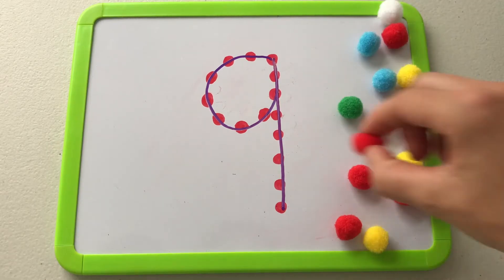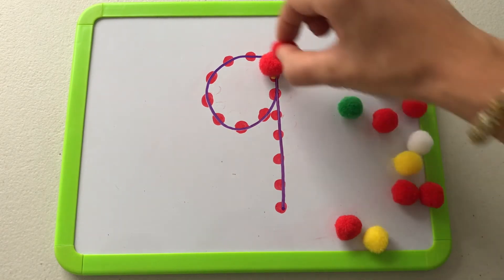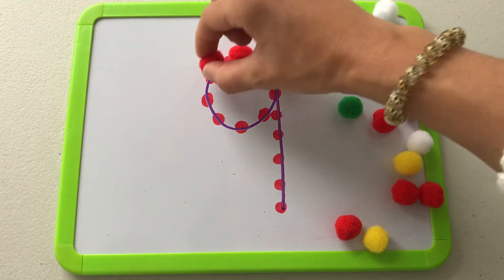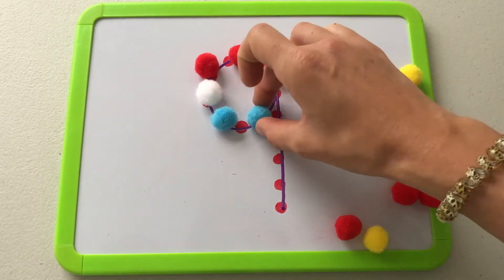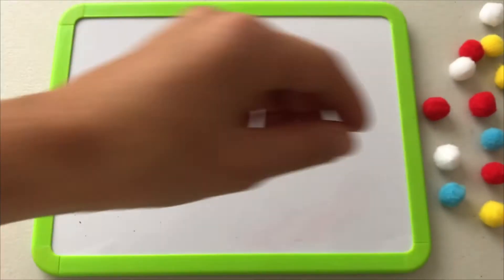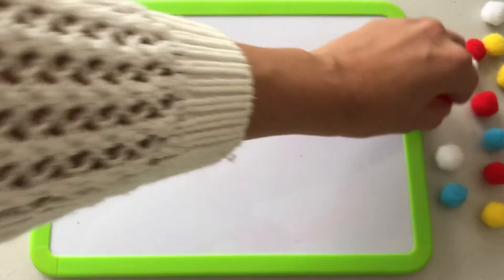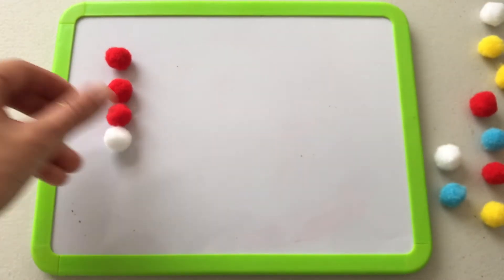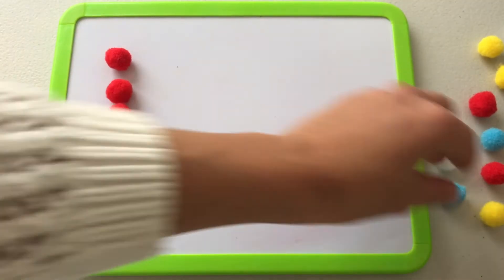You could then allow the child to explore by using pom-poms to outline the numbers that they have drawn on the whiteboard. Why not test them further and have them create numbers with pom-poms without the template in the background for them to follow?